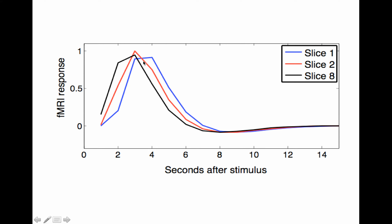Slice one is here in blue — this is the time course for slice one. Slice two is one second later, but the peak actually looks like it's one second sooner, because we're not adjusting the time to when the data were actually collected — this is just the time of the TR. And slice eight, which is much later, the peak is even earlier. So why would a model fit all of these well? We're going to try to fix that.